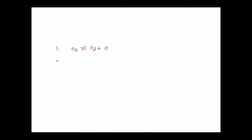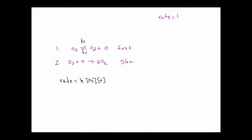Going to a second page: step number one has O3 in equilibrium, and elementary step number two has O3 plus O going to two O2s. This second step is slow and the first is fast. The rate law as written initially is equal to K times [O3] times [O], and the experimental rate law is K times [O3] squared times [O2] raised to the minus one.